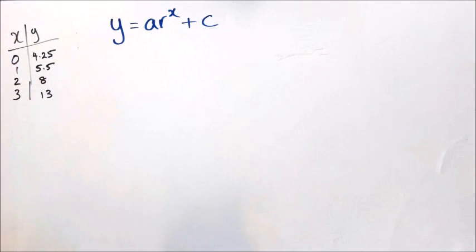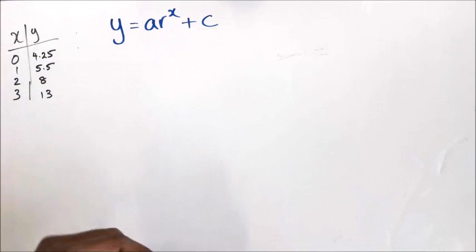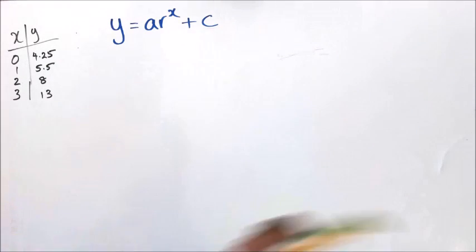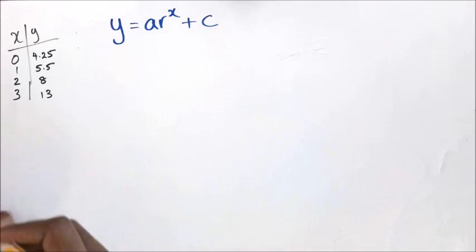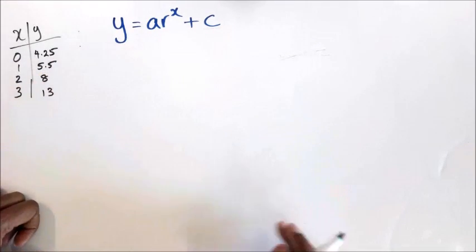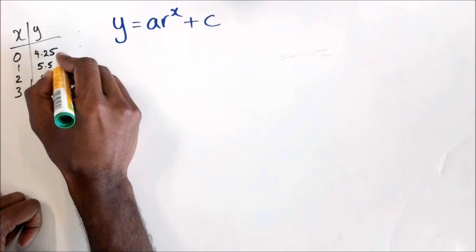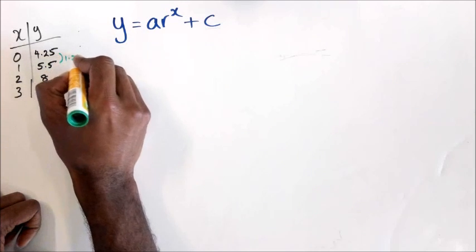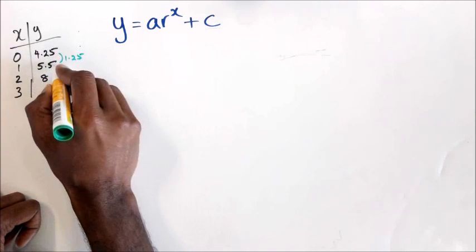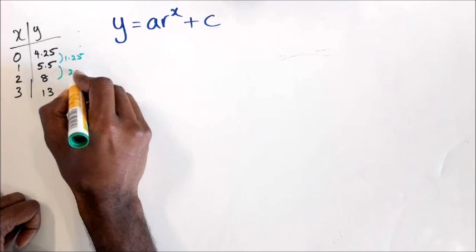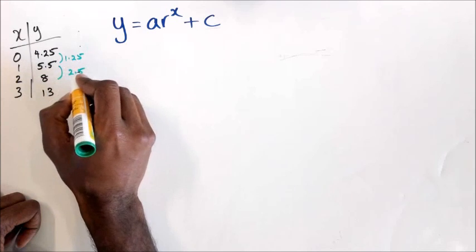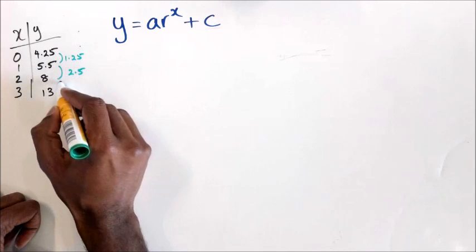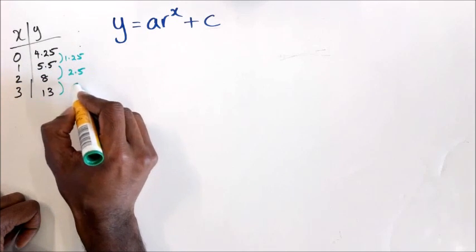You might have seen this in a completely different way, and that's absolutely fine. This is the one I like to work with. The first thing you want to be looking at is the difference between your y values. The difference between these two values is 1.25, the difference between these two values is 2.5, and the difference between 8 and 13 is 5.